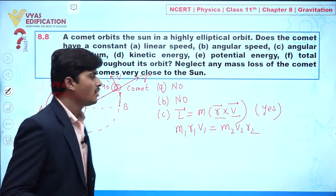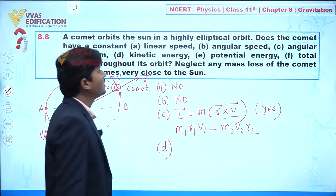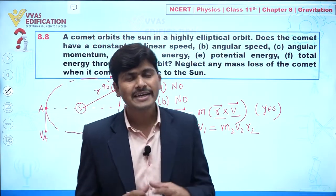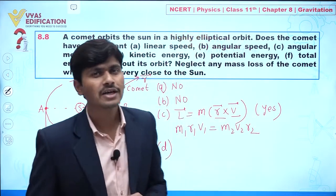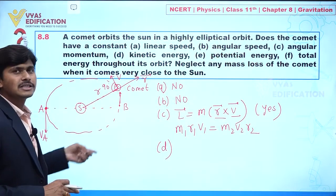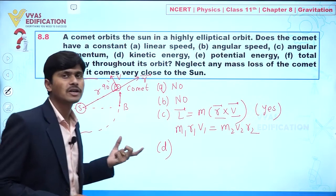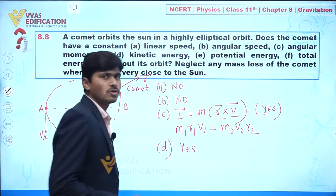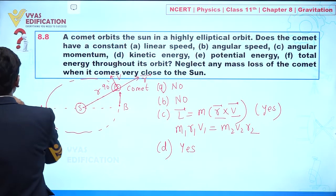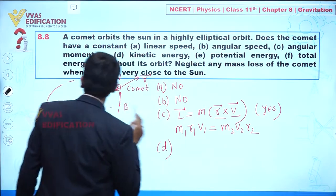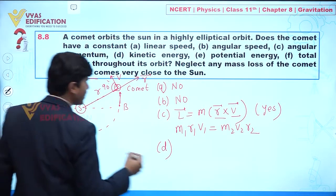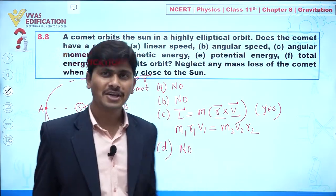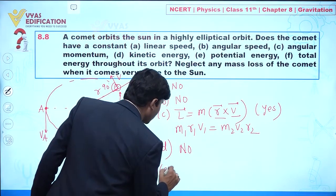Part (d): Kinetic energy. Kinetic energy is given by ½mv². Since the value of v is changing, the magnitude of velocity is changing, so kinetic energy also changes from point to point. Therefore, kinetic energy does not remain constant.